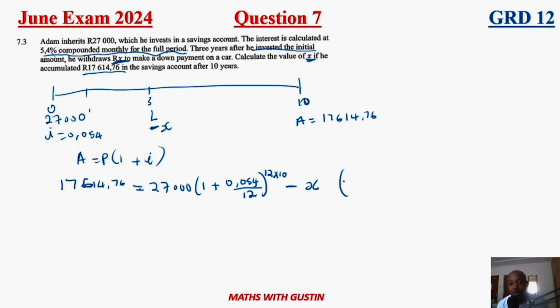Then they said after three years he withdrew this x amount of money. We don't know how much, but this x amount of money that he is withdrawing is part of the interest. This is where most learners make mistakes. You need to make this amount that is withdrawing to have gained interest. He's withdrawing it together with the interest that this has accumulated.